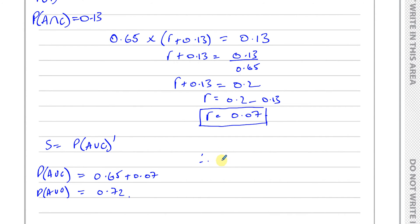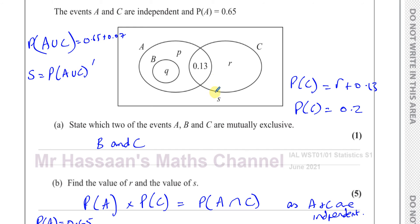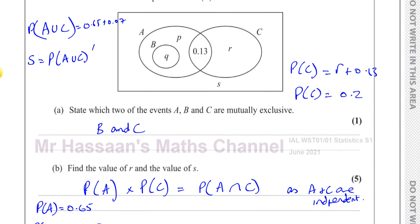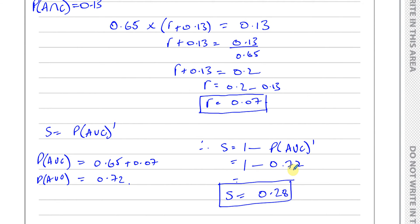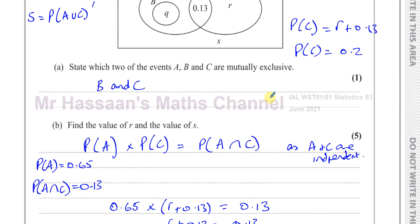Therefore S = 1 − P(A ∪ C) = 1 − 0.72 = 0.28. So we have found the value of R = 0.07 and the value of S = 0.28. That's part b done.